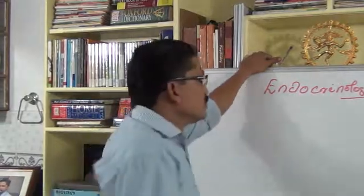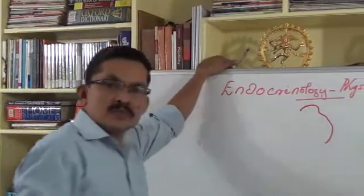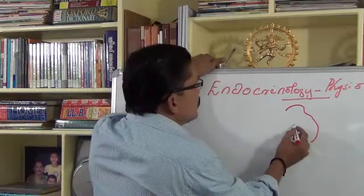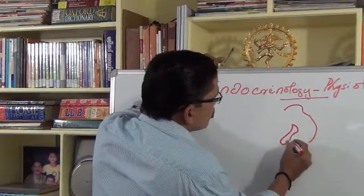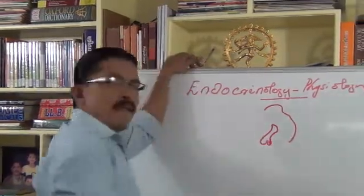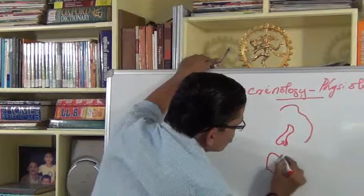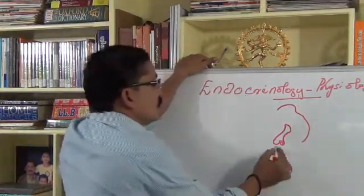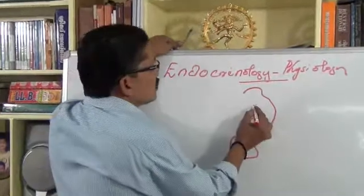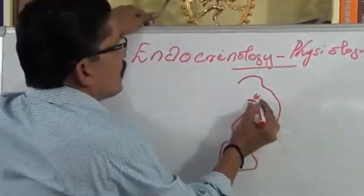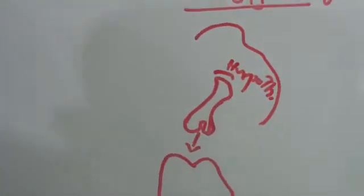As you know, our thyroid gland is under the control of pituitary, but at the same time pituitary is under the control of hypothalamus. So the thyroid gland functions very well with the orders from the pituitary, and pituitary obeys the orders of hypothalamus.